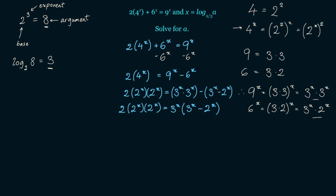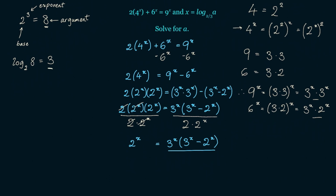Next, let's divide both sides by 2 times 2 to the x. On the left side these cancel out, and we're left with 2 to the x equals 3 to the x times (3 to the x minus 2 to the x), all over 2 times 2 to the x.